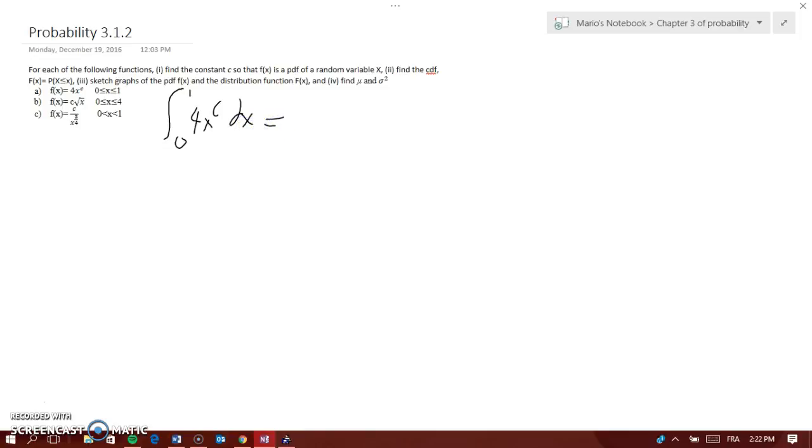Now, if you remember how to do integrals, that would be 4x C plus 1 over C plus 1. Remember, you have to add 1 to the exponent and divide by the exponent, and that would be from 0 to 1, and then you would have 4 over C plus 1. And that would be equal to 1 because the probability of everything is equal to 1, so that would be 4 equals C plus 1, and C would equal 3.